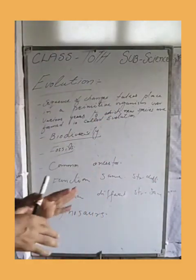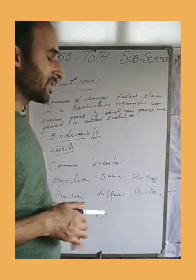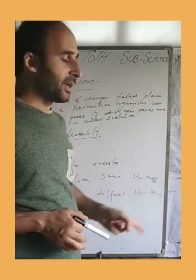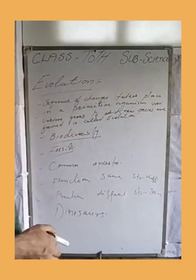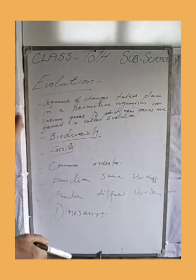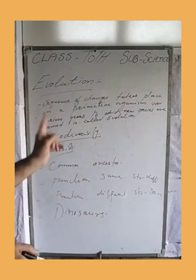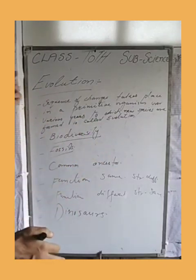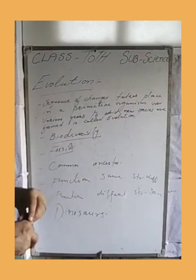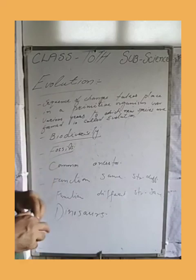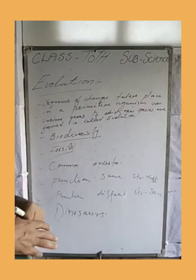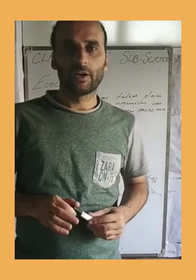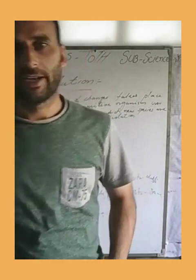Aakhir-kari kya hua hai ki yeh poori tarah is duniya mein se khatam ho gayi. Toh ye jo changes activity aati hai in organisms mein, yehi changes ke activity give rise to the process of evolution. So that was all about today's topic. Have a nice day.